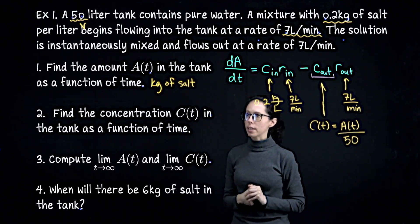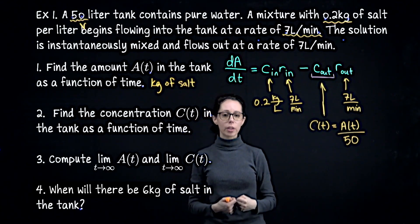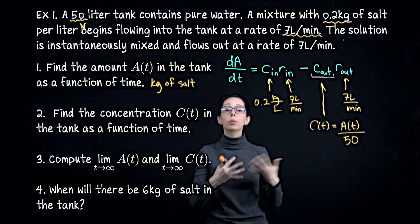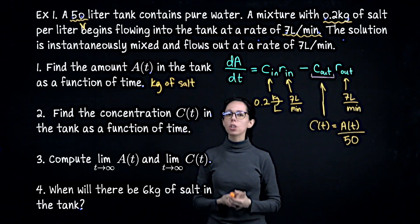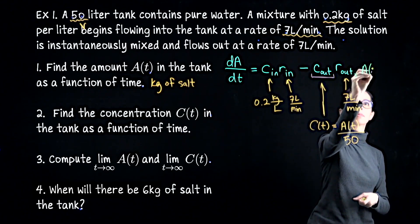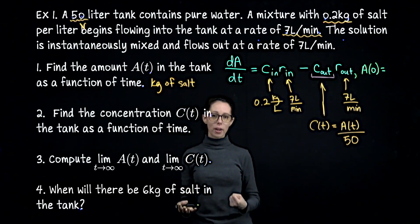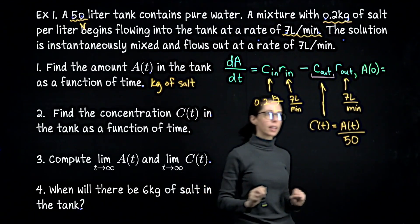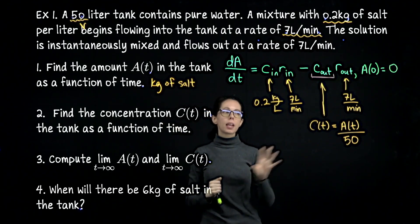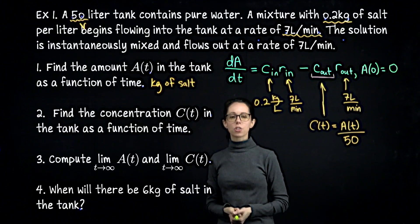We're going to find the function A(t) for kilograms of salt at time t by solving the differential equation. These problems are initial value problems — what is the initial amount of salt? Since we started with pure water, at t=0 there was no salt. So our initial condition is A(0) = 0. After finding A(t), concentration C(t) is simply A(t) divided by 50.